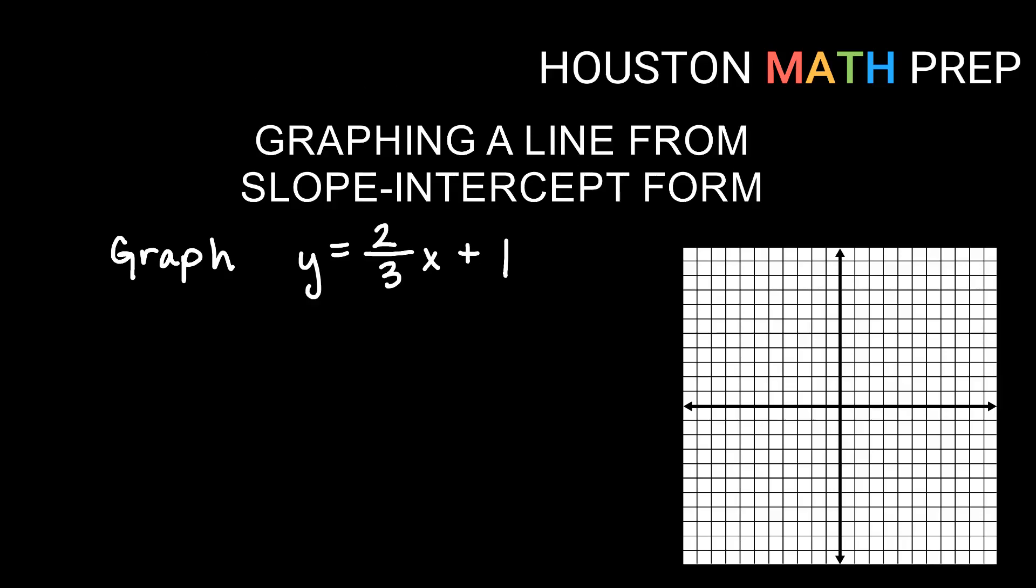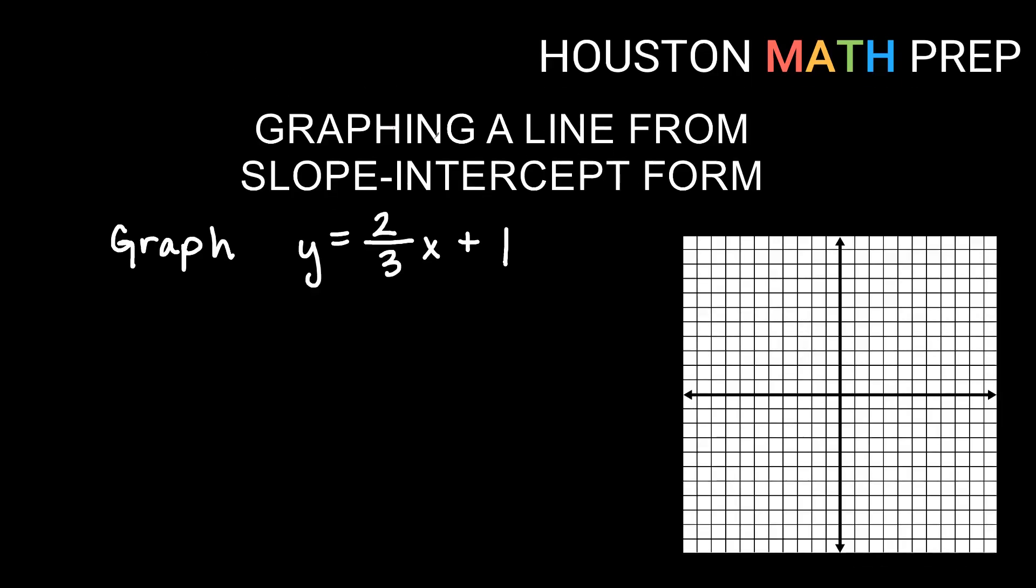Hopefully you have already watched our video on slope or know something about slope. When we talk about slope intercept form, we're talking about your equation being solved for y, particularly y equals mx plus b. If you remember this idea, b is our y intercept and m is our slope. That's why it's called slope intercept form, because as we read it, it tells me the slope and the y-intercept.